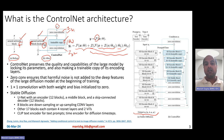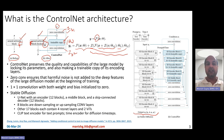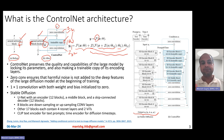ControlNet preserves the quality and capabilities of the original large model by locking its parameters. It freezes the parameters of the original model and only makes a trainable copy. While training, you essentially update the parameters Z1, Z2, and theta C — which are the parameters of the right branch, the ControlNet branch.